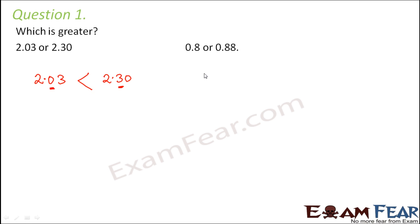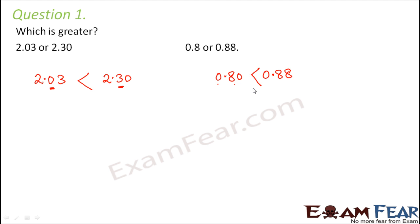Next: 0.8 and 0.88. Now 0.8 basically means 0.80. So in this case the ones place is the same and the tenths place is the same. Only at the hundredths place there is a difference — here you have 8, here you have 0. Now 8 is greater than 0, therefore 0.88 is the bigger number.